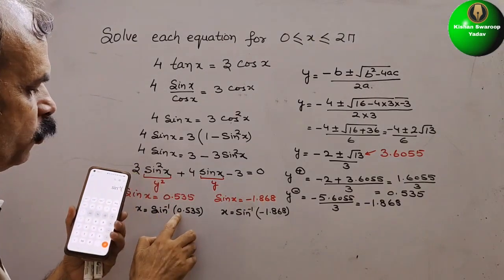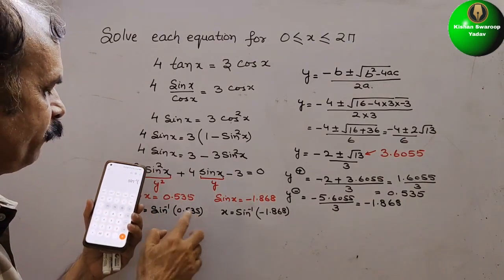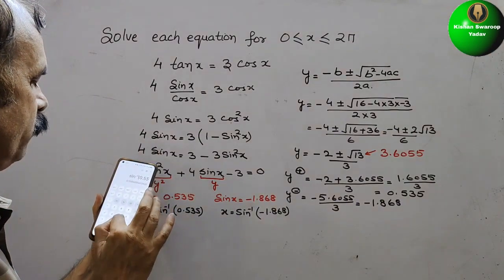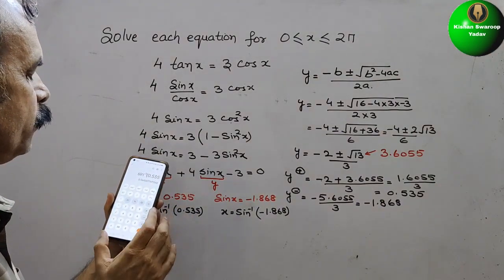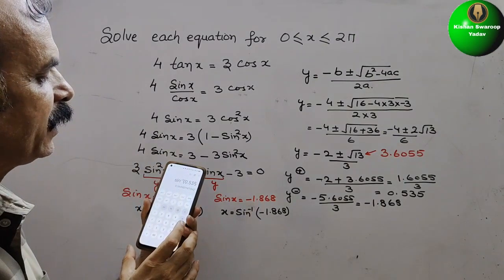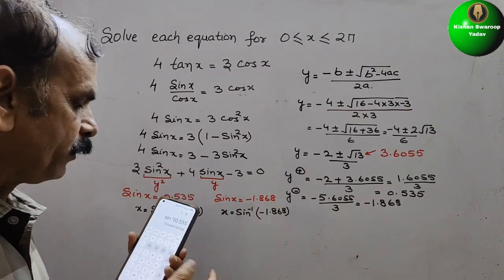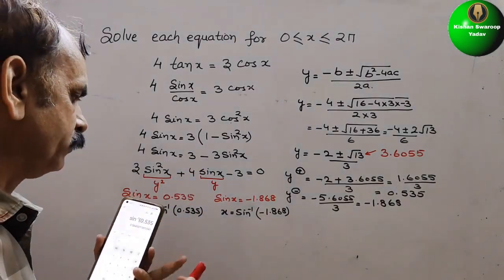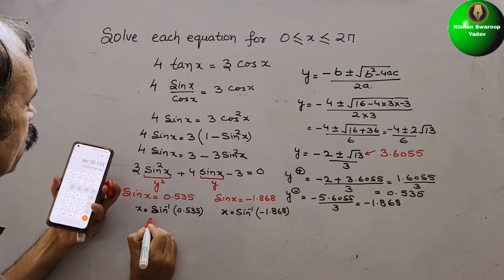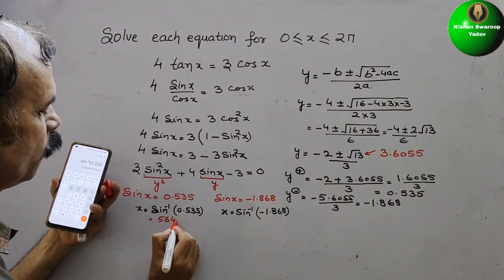Press sin inverse and open bracket, then write 0.535. So here you got 0.5645. The first value is 0.5645.